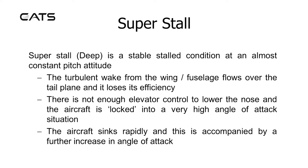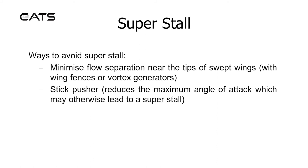The super stall (deep stall) is a stable stalled condition at an almost constant pitch attitude. The turbulent wake from the wing and fuselage flows over the tail plane and it loses its efficiency. There is not enough elevator control to lower the nose and the aircraft is locked into a very high angle of attack situation — the aircraft sinks rapidly with a further increase in angle of attack. Ways to avoid super stall: minimise flow separation near the tips of swept wings with wing fences or vortex generators; utilising a stick pusher reduces the maximum angle of attack which may otherwise lead to a super stall.